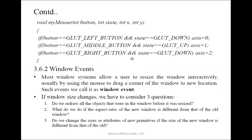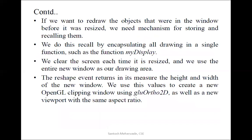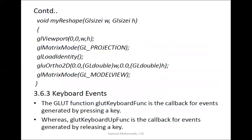Then window events. It talks about the reshape function, which we have discussed multiple times. It always takes two parameters: width and height. We have discussed GL matrix mode with GL_PROJECTION and model view, GL load identity, and GL ortho 2D — this is the command used. Based upon the new width and height, that is given as input to GL ortho 2D.